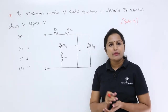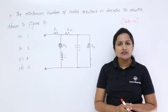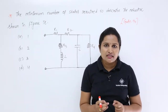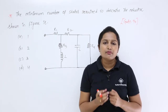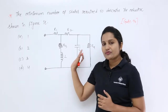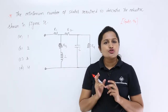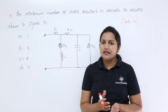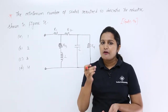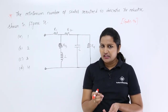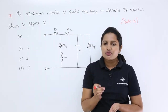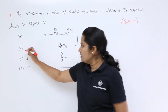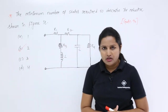Depending upon the memory elements in the network, we can say the number of states required to describe the network. As we are having two memory elements, we need two states to describe the network. So the answer is option P.